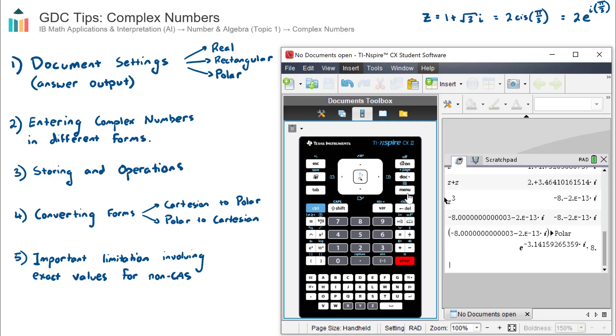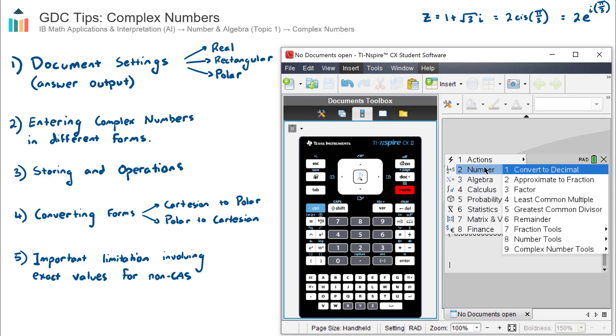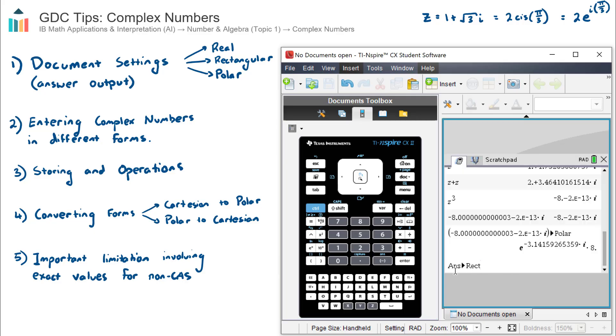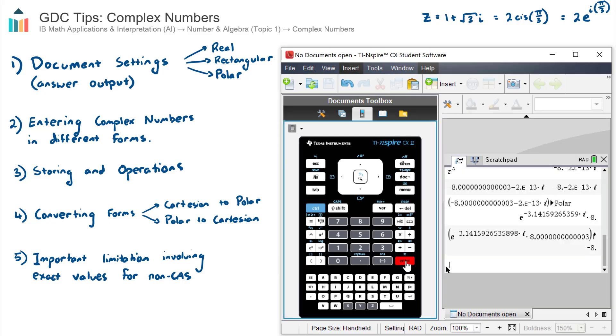If I want to convert that back, I just go menu. Number two, number. Number nine, complex number tools. Convert to rectangular. It pulls my answer from above. Hit enter. And I just convert it back.